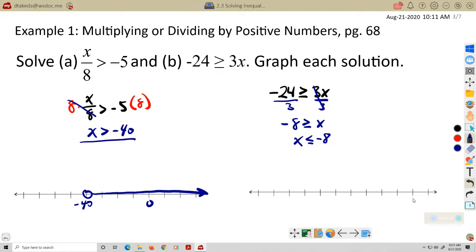So let's see. 0, 2, 4, 6, 8, negative 8. Let's call that negative 8. Solid dot. And we want the numbers that are less than negative 8, so we're going to the left. And we put boxes around our solutions because that's the part that says that's the one you want me to grade.